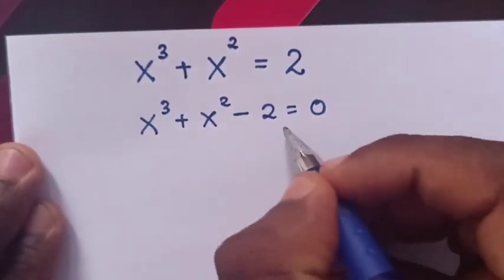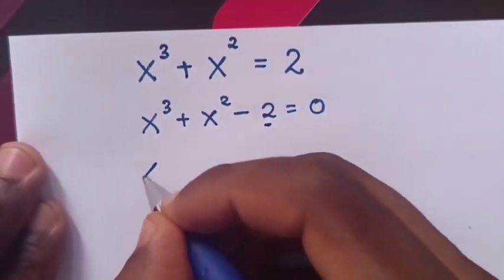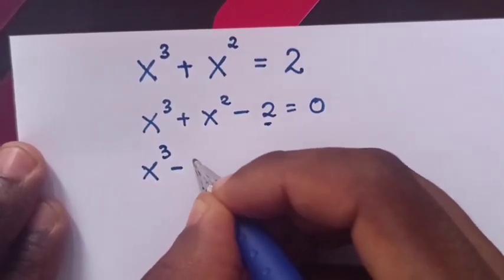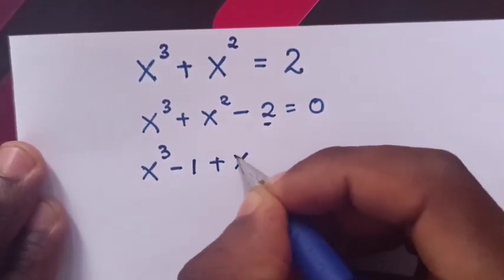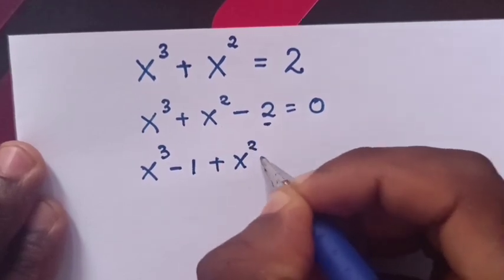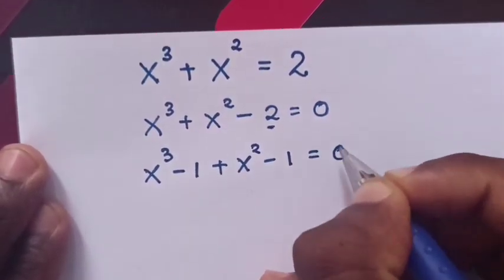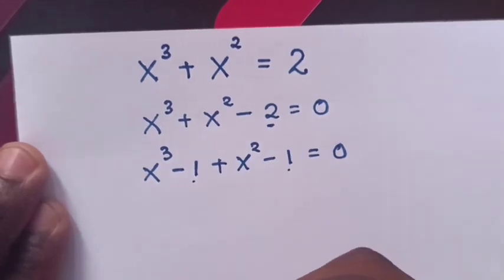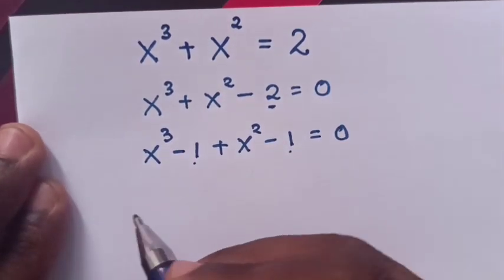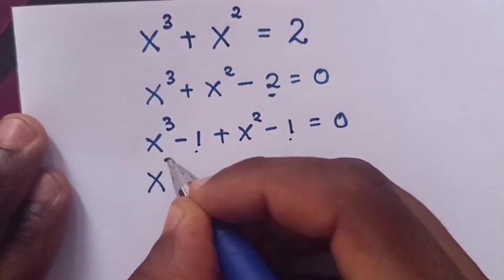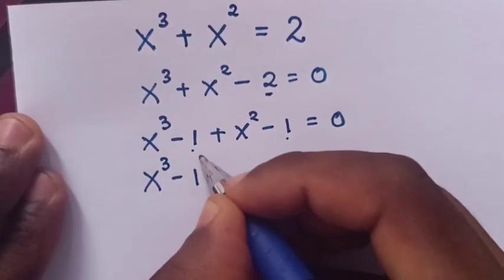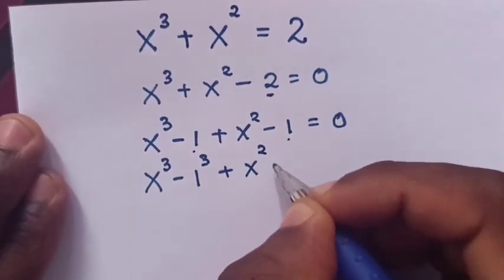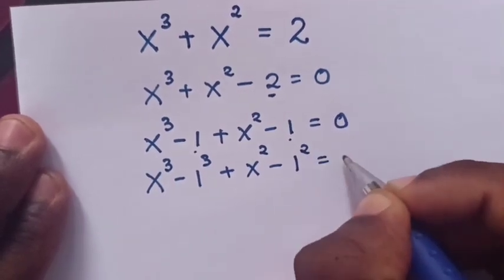From here, we split negative 2 as negative 1 and negative 1. So it will be x power 3 minus 1 plus x squared minus 1 is equals to 0, because negative 1 and negative 1 is equals to negative 2. Then our equation is the same as x power 3 minus 1 power 3 plus x squared minus 1 squared is equals to 0.